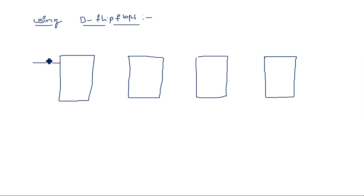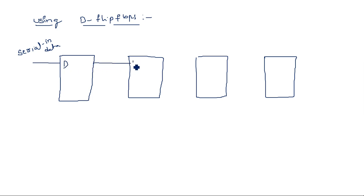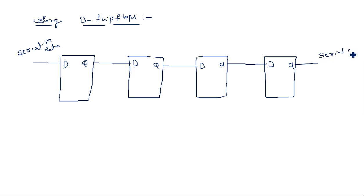Here is the serial-in data — a single bit, either zero or one — entering the first D flip-flop. The output Q of this flip-flop is connected to the D input of the next D flip-flop. Again, Q of that flip-flop is connected to the next one, and Q of the third is connected to the last flip-flop. The output of the last flip-flop is the serial out.